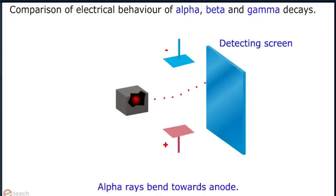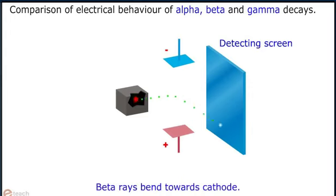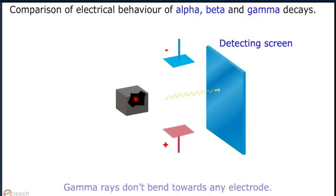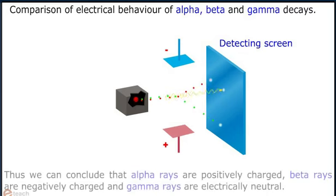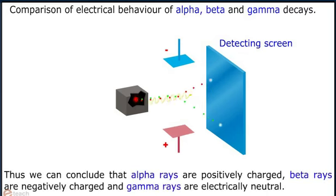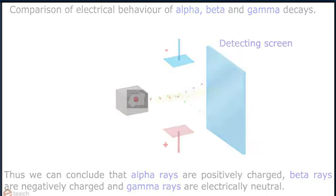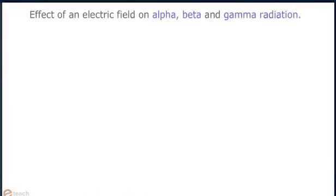Comparison of electrical behavior of alpha, beta, and gamma decays: Alpha rays bend towards the anode. Beta rays bend towards the cathode. Gamma rays don't bend towards any electrode. Thus, we can conclude that alpha rays are positively charged, beta rays are negatively charged, and gamma rays are electrically neutral.